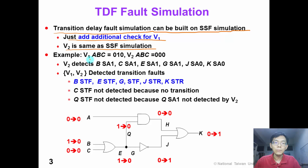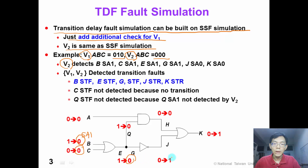Take the following circuit for example, given this pair of test patterns where V1 equals (0, 1, 0) and V2 equals (0, 0, 0). When we force simulate vector 2, we know that B stuck-at-1 is detected by vector 2. Also, C stuck-at-1 is detected, E stuck-at-1, G stuck-at-1, J stuck-at-0, and K stuck-at-0. These single stuck-at faults are detected by vector 2.